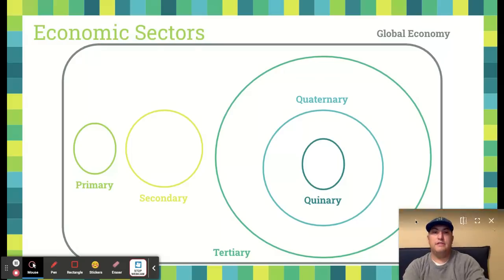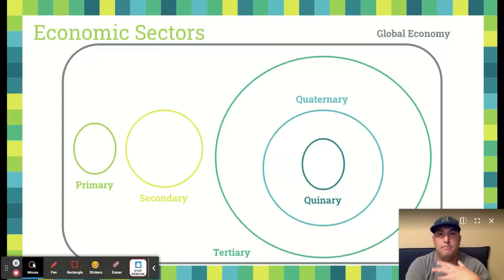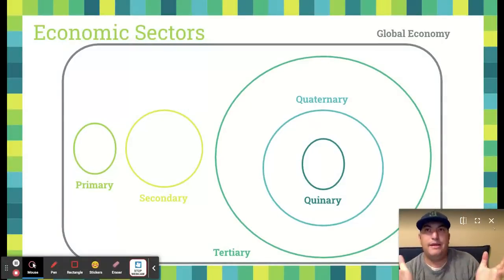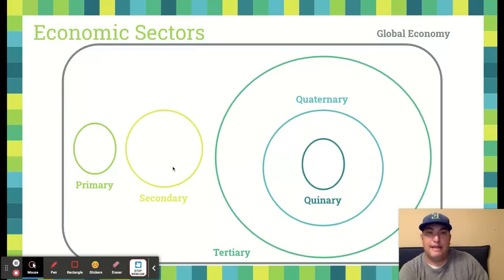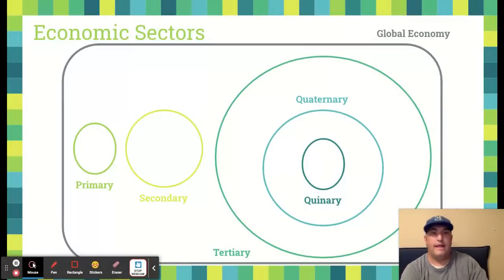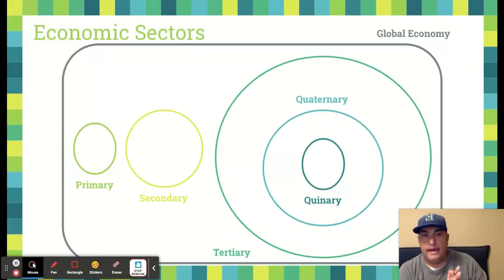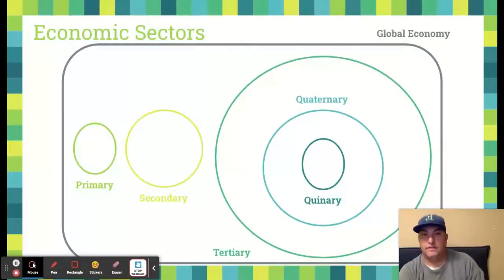This big green circle is the tertiary sector, and this is all about services. Service jobs are what the majority of the American economy today is made out of. People mainly go to work doing something for somebody else. We have very few farmers in the United States. Our secondary sectors are decreasing very rapidly, and that's because most people are working in the tertiary sector doing some sort of service-oriented job — and that can be lots of different things: teaching, real estate, working at a restaurant, law, healthcare — all of those are services.